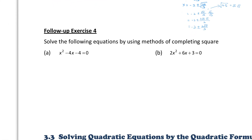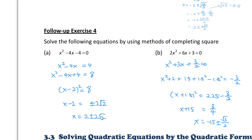Try to do follow-up exercise 4. Remember, pause the video after finishing, then play the video to check your answer. For part (a): the coefficient of x² is already 1, so go to step 2. The coefficient of x is −4; divide by 2 gives −2, so add (−2)² = 4 on both sides. Then x² − 4x + 4 = (x − 2)² = 8. Take the square root on both sides: x − 2 = ±√8, then add 2 to both sides.